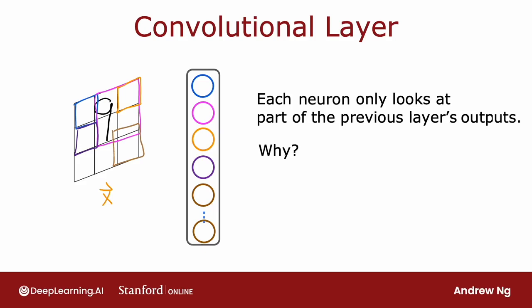So, why might you want to do this? Why won't you let every neuron look at all the pixels, but instead look at only some of the pixels? Well, some of the benefits are, first, it speeds up computation.